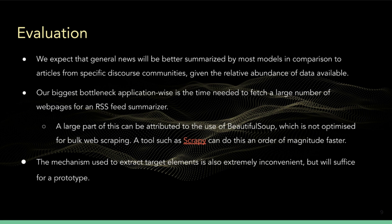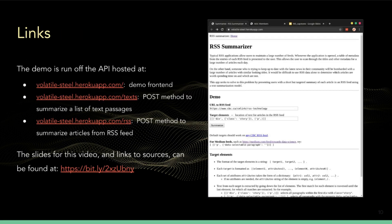Unfortunately, the mechanism we have used to extract the target elements from each article is also extremely inconvenient, but it will suffice for now in order to demonstrate what is going on. You can check out our prototype on Heroku by following the links provided. In particular, we would like to draw your attention to our demo frontend, which will allow you to interface with our prototype without having to provide complicated POST requests. The Text and RSS methods will allow you to use the API directly. Sources used in this project can be accessed through our slides.